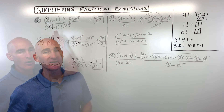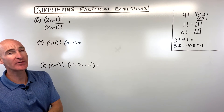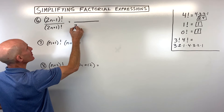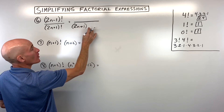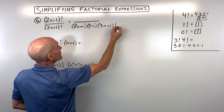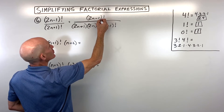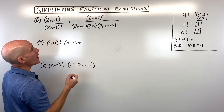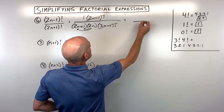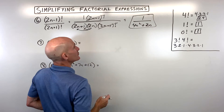For example number six, we have 2n minus one factorial over 2n plus one factorial. The denominator is larger here, so I start expanding the denominator: 2n plus one, subtract one gives 2n, subtract one gives 2n minus one factorial. Those match the numerator and cancel, leaving one in the numerator. Then distributing 2n gives us a denominator of 4n squared plus 2n.